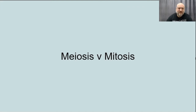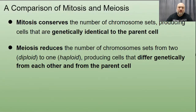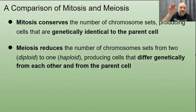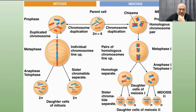What are some differences between meiosis and mitosis? Mitosis conserves the number of chromosomes, producing cells genetically identical to the parent — same number of chromosomes with the same genes in the same spots. Meiosis reduces the number of chromosome sets from two (diploid) to one (haploid), producing cells that differ genetically from each other and from the parent. In the diagram you can see mitosis produces two cells that look just like the parent, while meiosis I and meiosis II produce four unique haploid cells.